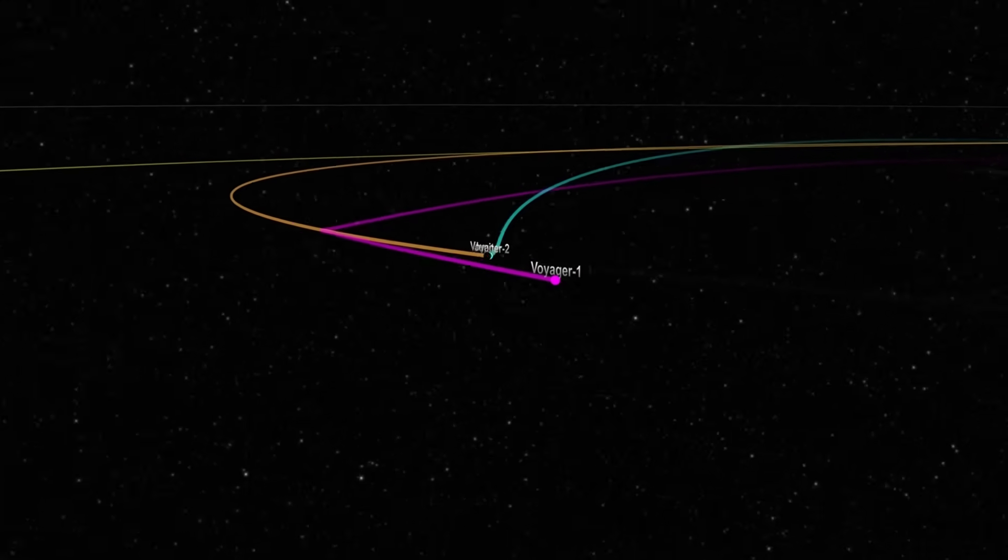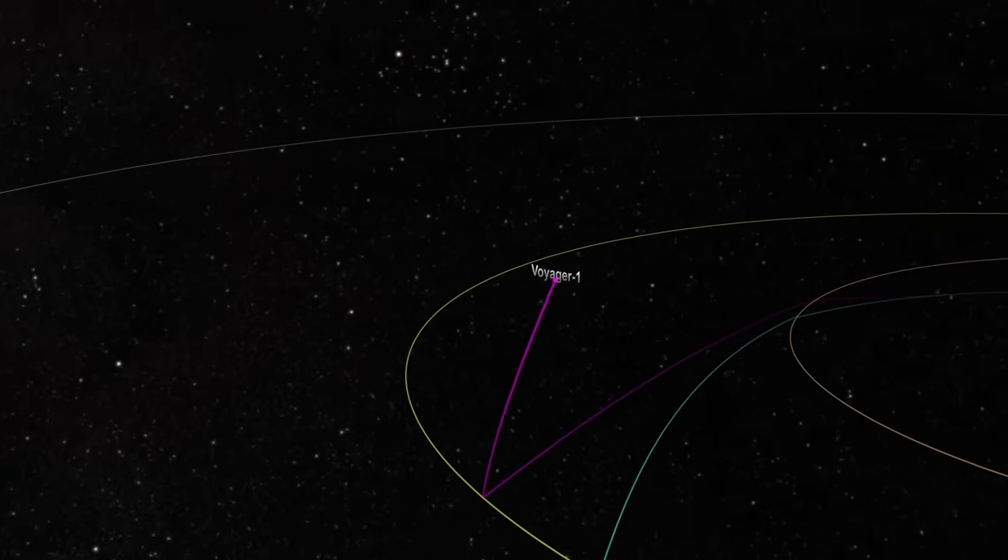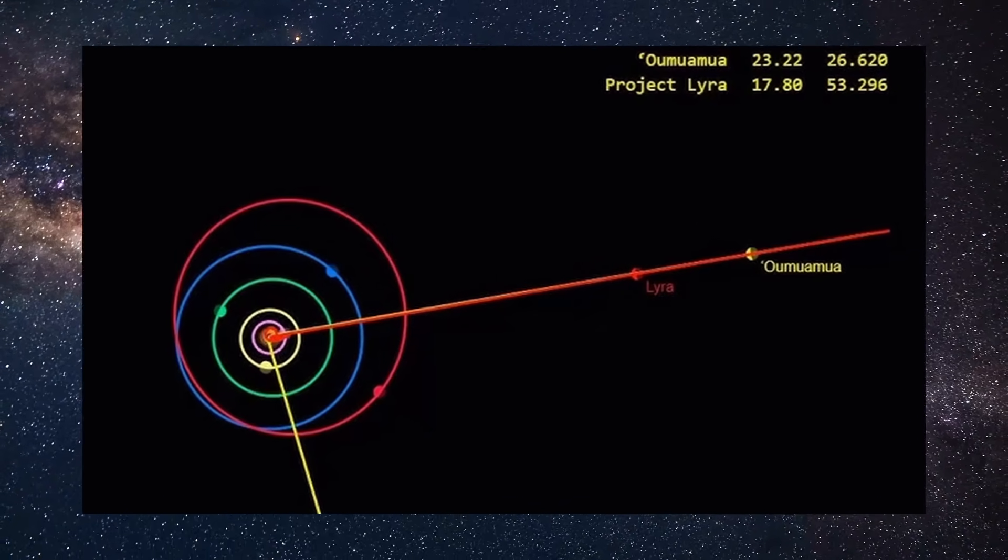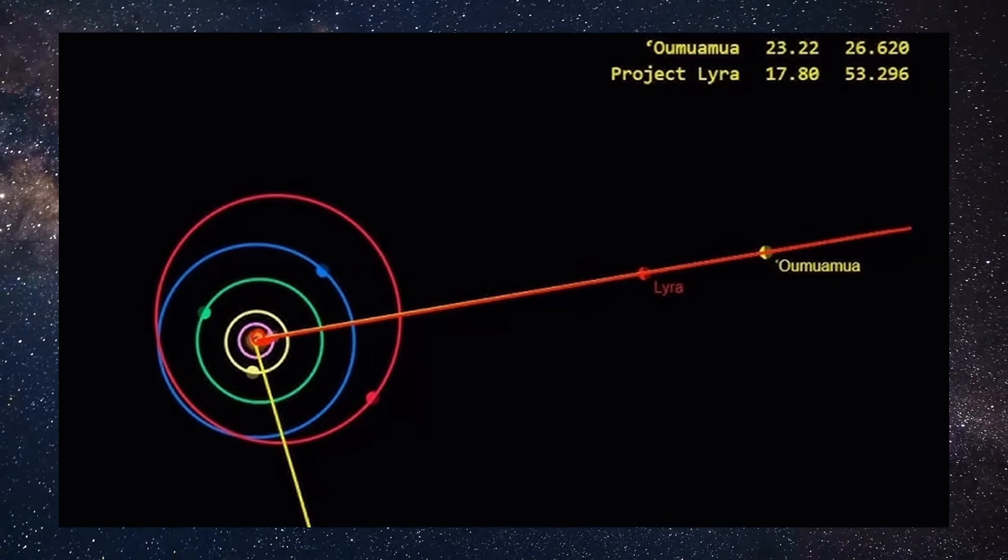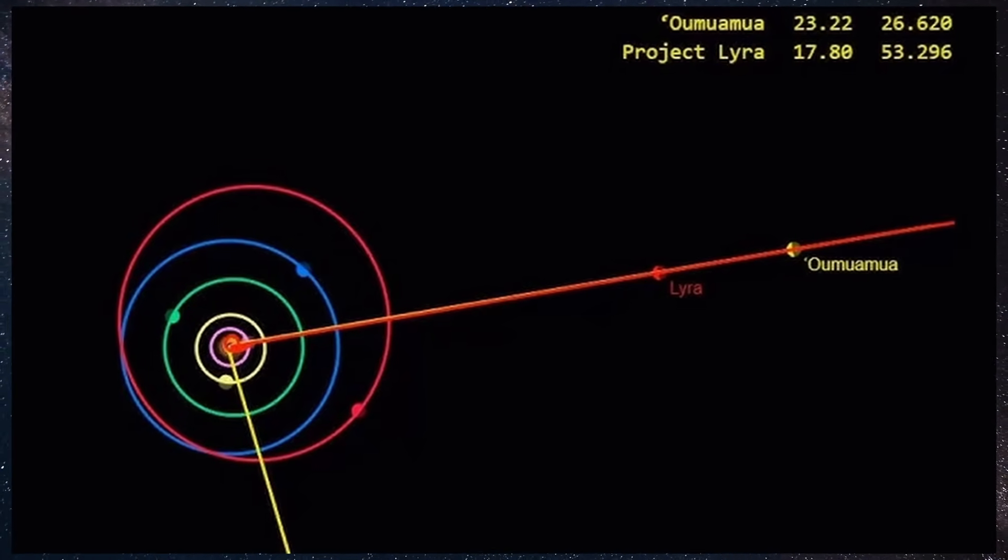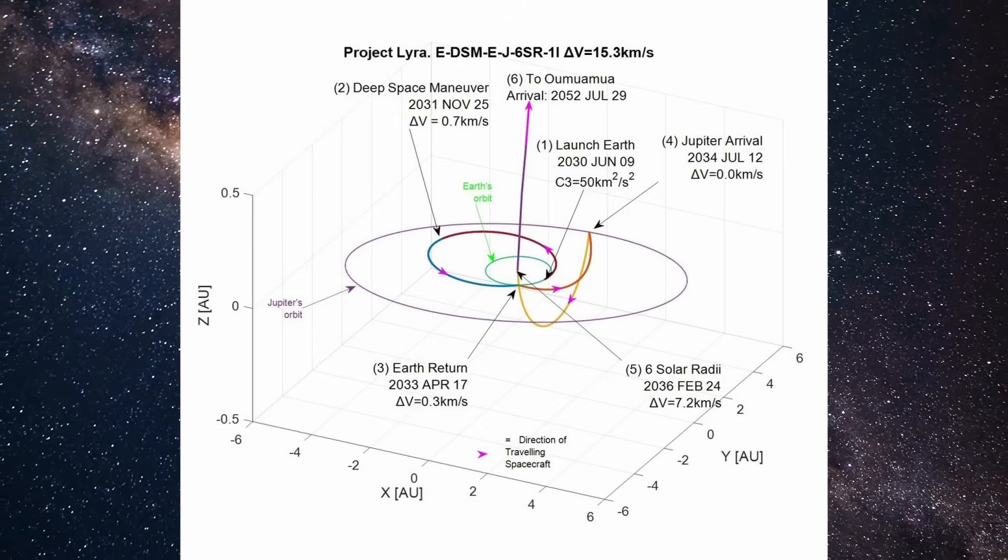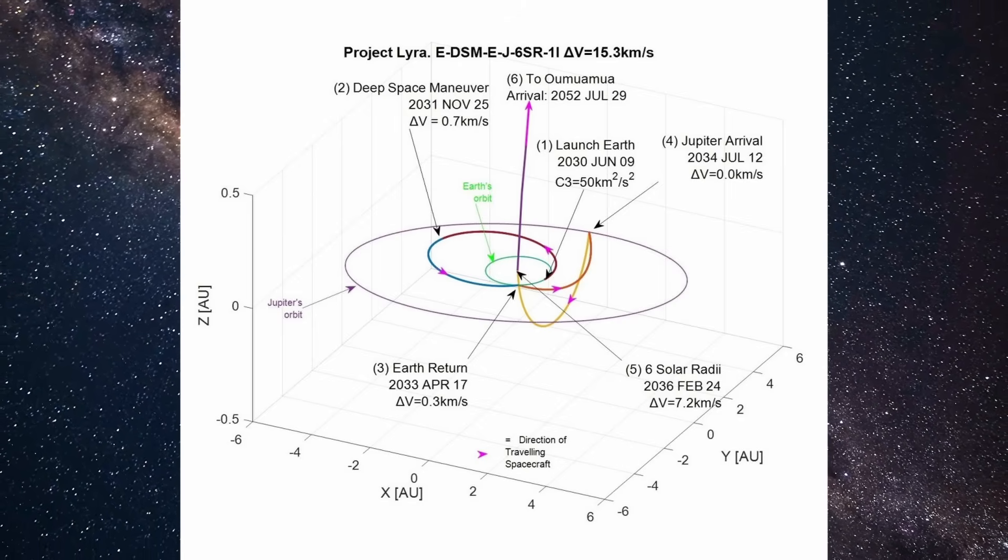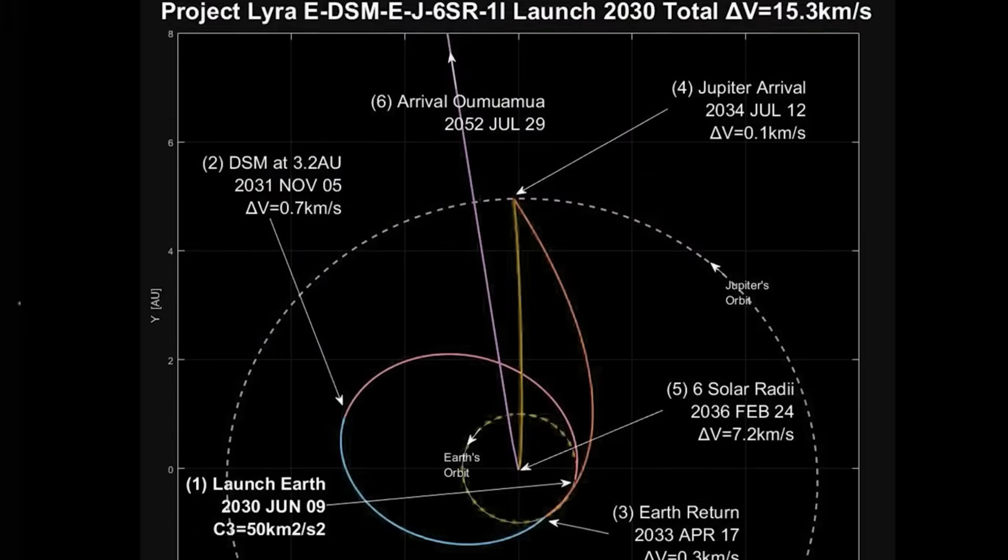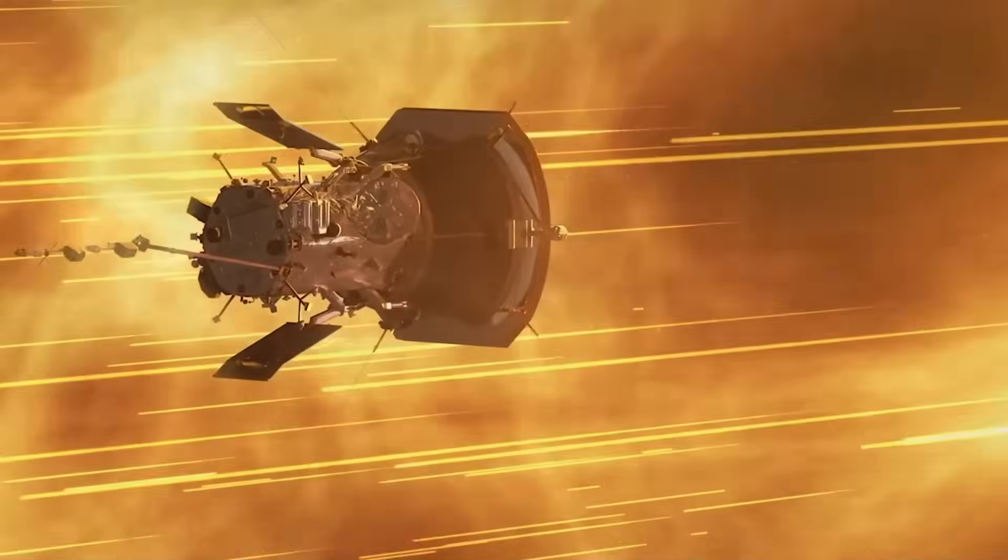The second option skips the Sun entirely. It uses a series of gravity assists from Venus, Earth, then Jupiter, to fling the spacecraft in the direction of Aumuamua. It's slower than the Oberth Maneuver, but it's less risky, easier to control, and makes it possible to slow down once it reaches the target, critical for getting real data. Project LIRA estimates a launch window between 2030 and 2033, and arrival by 2048. Yes, that's over two decades from now. But for the first time, humanity would be sending a probe outside the solar system to chase something that isn't ours.